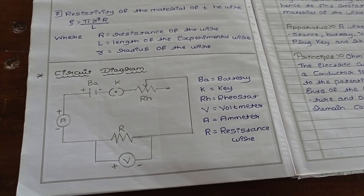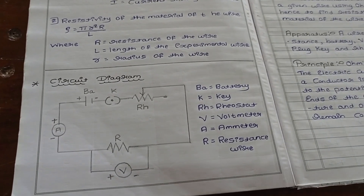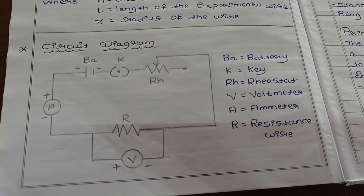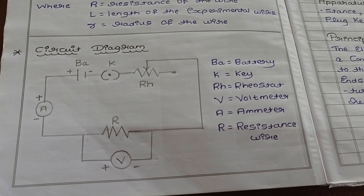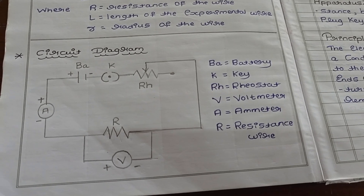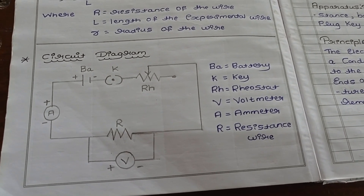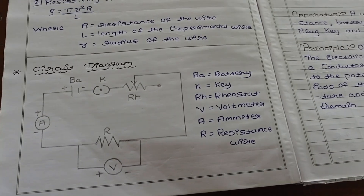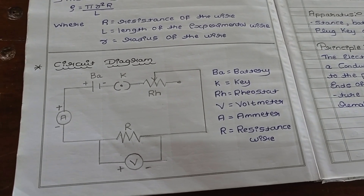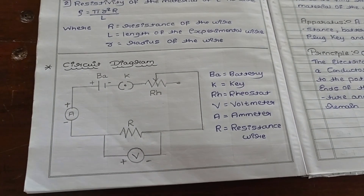Here I am directly moving to the practical section. Here this is the circuit diagram. By this circuit diagram we are going to calculate the resistivity of a material of a given wire. Here you may take steel wire or copper wire. For that wire we have to find the resistivity. It is having certain particular length intervals.